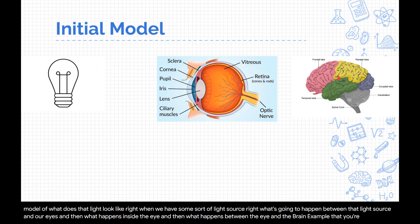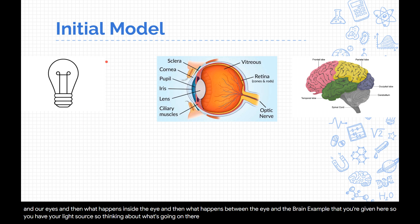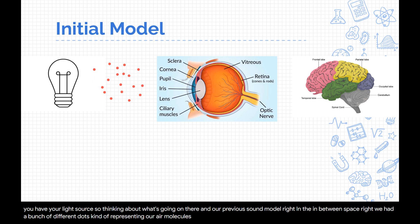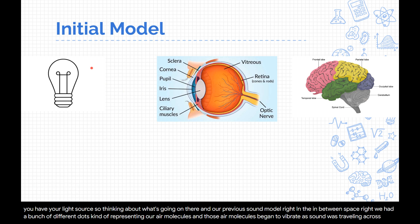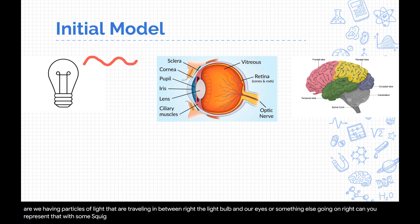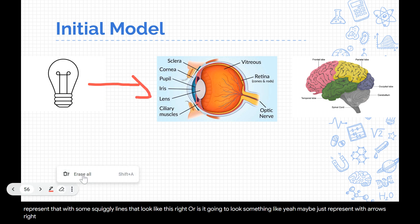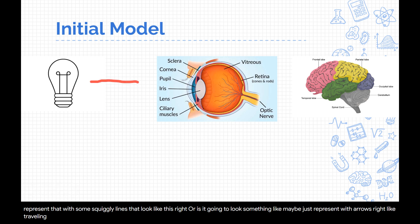So this is kind of the example you're given. You have your light source. Thinking about our previous sound model — in the in-between space we had dots representing our air molecules, and those air molecules began to vibrate as sound traveled across. So are we having particles of light traveling between the light bulb and our eyes, or something else going on? Can you represent that with squiggly lines, or maybe just arrows or straight lines?